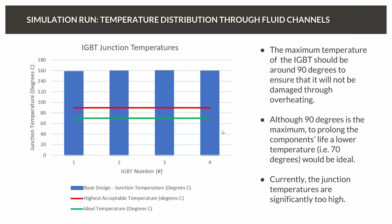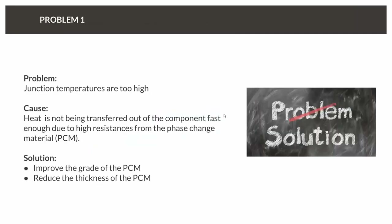From probe points located at the center of each device, the highest acceptable junction temperature is about 90°C and ideal is about 70°C. This base design comes in significantly higher at close to 160°C. That made me think about how to reduce the thermal resistance between the cooling block and the devices. Summary: junction temperatures are too high because heat is not transferred out of the component fast enough, caused by high resistance from the phase change material.